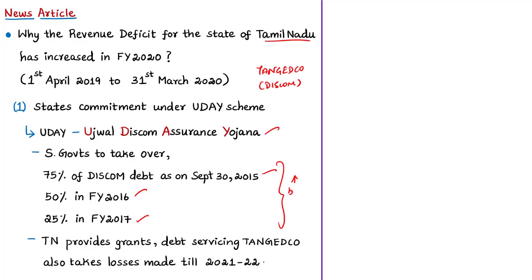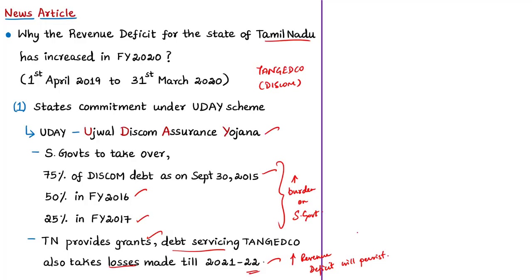Under UDAY, states issued bonds to take over debt and transfer proceeds to discoms through a mix of grant, loan, and equity. The state government is providing grants to TANGEDCO, making interest payments for debt servicing, and absorbing losses until 2021-22, increasing revenue deficit. The key idea is that discom inefficiencies and losses should not be passed on to consumers as increased electricity tariffs. This is one major reason for Tamil Nadu's rising revenue deficit.